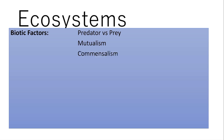The next form is commensalism — and this is just a review. Remember, commensalism is where one animal benefits and the other is unaffected. In this case, it's a shark and a remora.